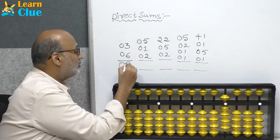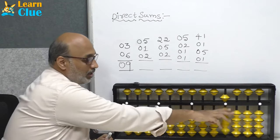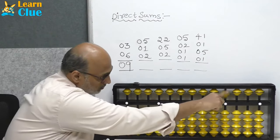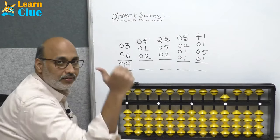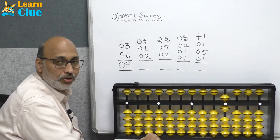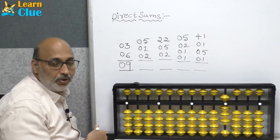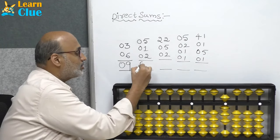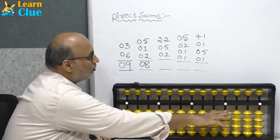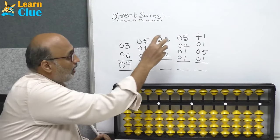Clear the abacus. Next problem: plus 5, plus 1 — use your thumb finger to add an earth bead. Now plus 2 — again add with your thumb finger only. What is the answer? Eight. The answer is eight.